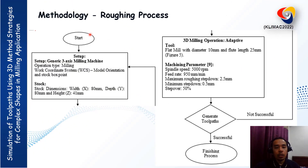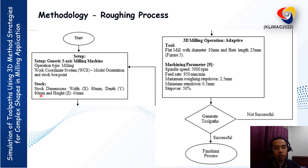I would like to present the detail of the roughing process. In the roughing process, we need to set the operation type — for example, milling. We need to determine the work coordinate system, or datum. In this study, we choose the center as our datum. The stock dimensions are: width 80 mm, depth 80 mm, and height 41 mm. For the adaptive strategy, we choose a flat end mill with diameter 10 mm and foot length 25 mm. The machining parameters are referenced from high-speed machining values from published papers.